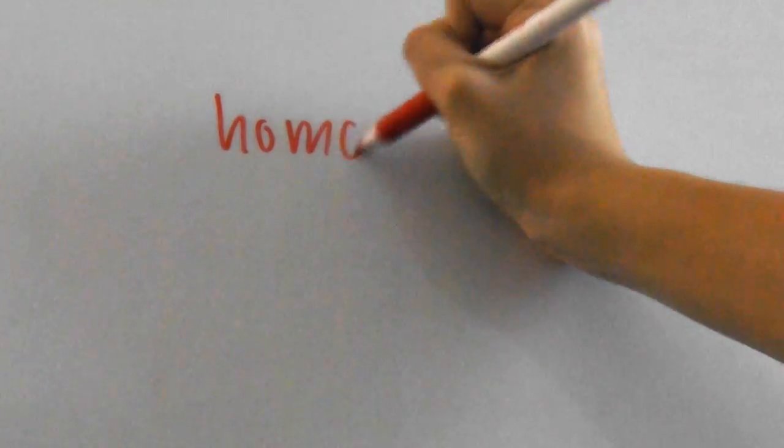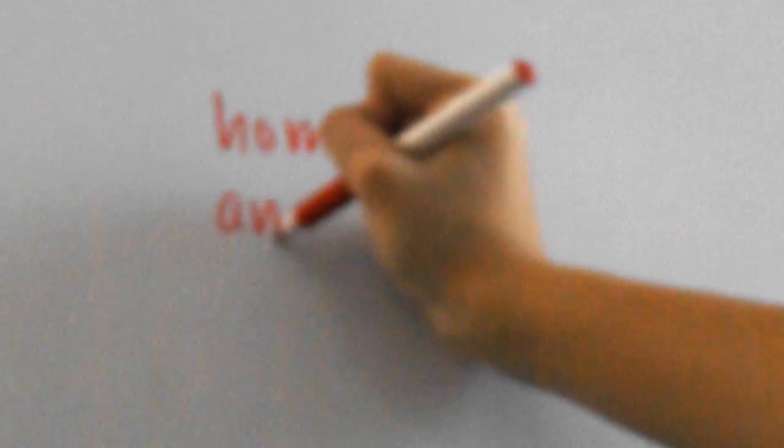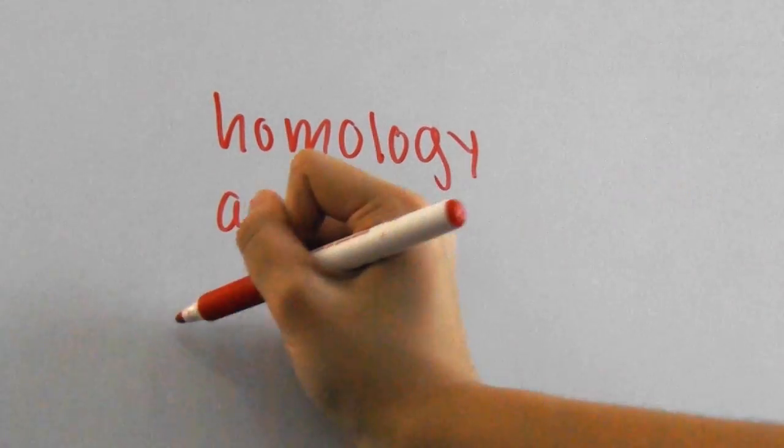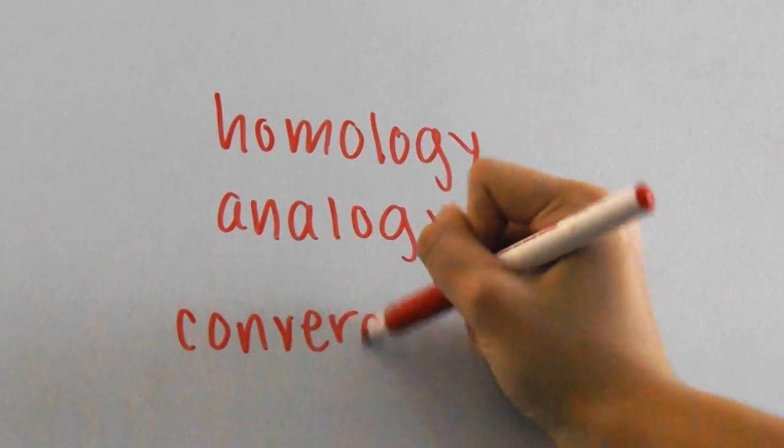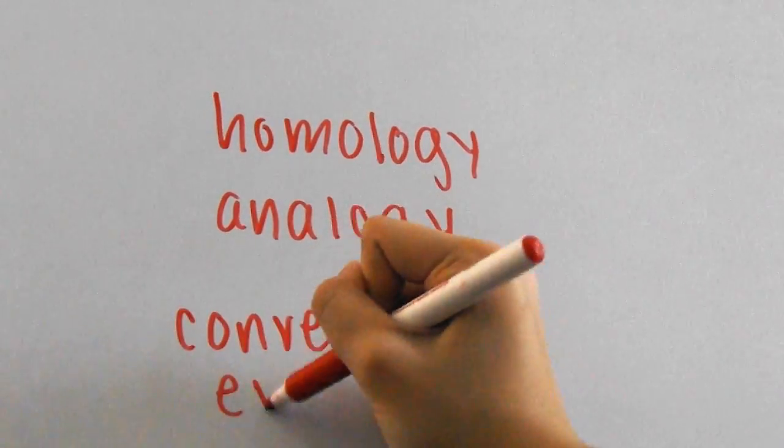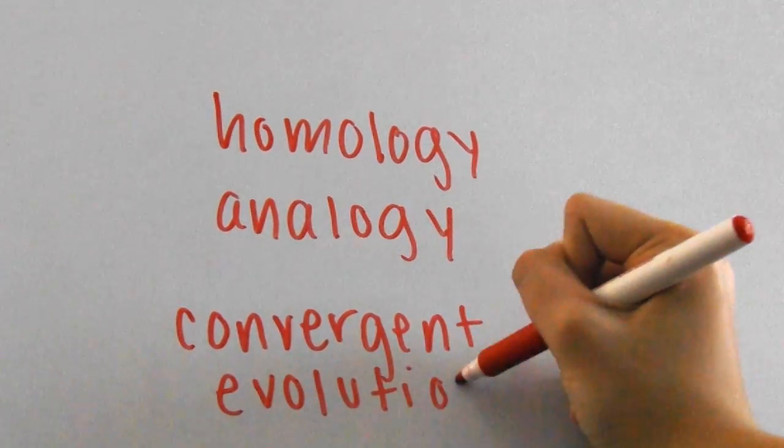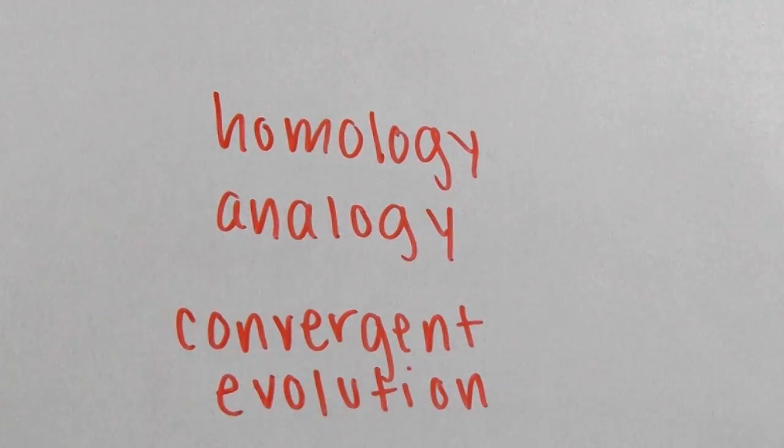In this video, we'll be going over what homology and analogy are in addition to convergent evolution. It's actually very simple, and once you've got the hang of it, it'll pretty much stick with you the whole year. So to start, we've got homologous and analogous structures.